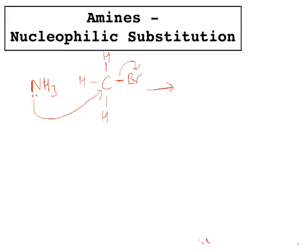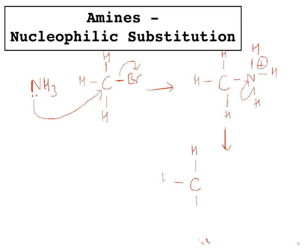What you create is a carbon with four groups around it, one of them being the ammonia group, which still has three H's on it. It was neutral at the beginning, so it is now making more bonds than it wants to, and the nitrogen is positively charged. In order for that positive charge to disappear, one of these hydrogens leaves, quenching that positive charge, and what we create is our primary amine: CH3NH2.